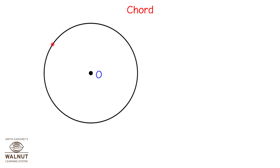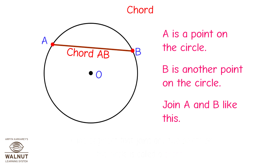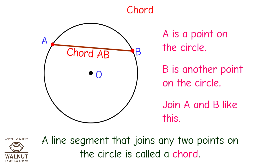Now let's look at chords. A is a point on the circle and B is another point on the circle. Join A and B. A line segment that joins any two points on the circle is called a chord. An infinite number of chords can be drawn in a circle. A circle has many different chords — some chords pass through the center and some do not.